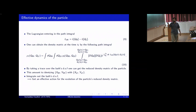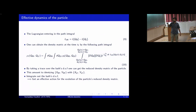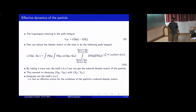At the level of the path integral, this amounts to identifying the bath degrees of freedom on the two legs at the future time T_f. In the evolution of this reduced density matrix, one can express the path integrals in terms of just the degrees of freedom of the particle by integrating out the bath degrees of freedom. This will give an effective action for the evolution of the particle's reduced density matrix.